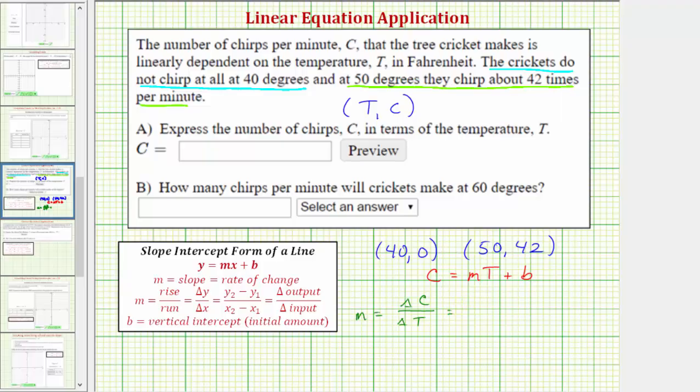To keep things organized, let's call this ordered pair T₁ comma C₁, and this ordered pair T₂ comma C₂. So C₂ minus C₁ is 42 minus 0. T₂ minus T₁ is 50 minus 40. Simplifying, we get 42 divided by 10, which equals 4.2.